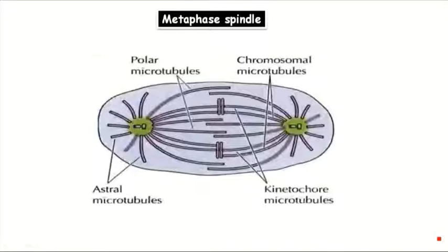First I will tell when the metaphase spindle starts forming. So within a cell, DNA molecules replicate during the S phase — the S phase of the cell cycle — and throughout the S phase and G2 it remains in an intermine state.